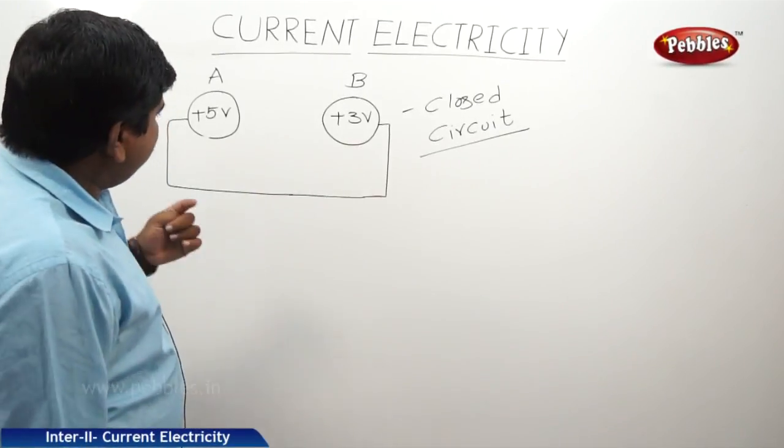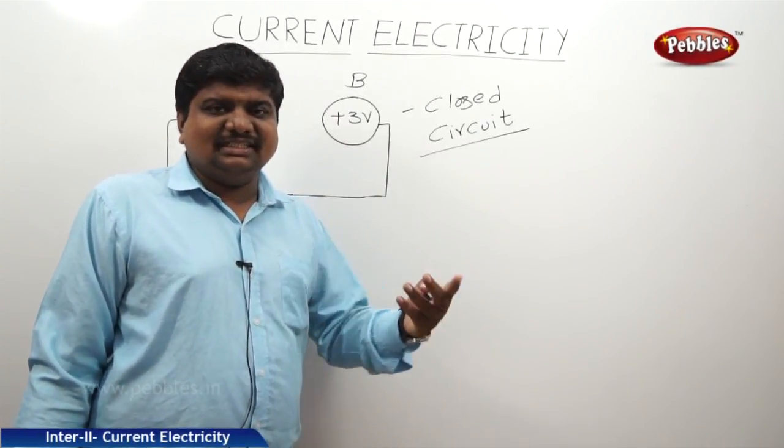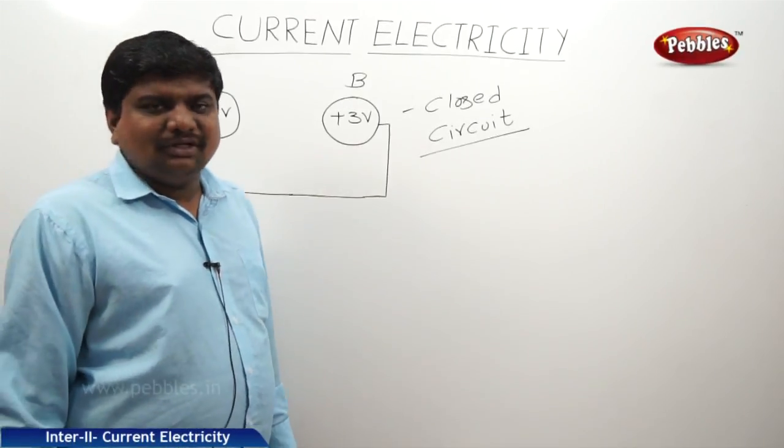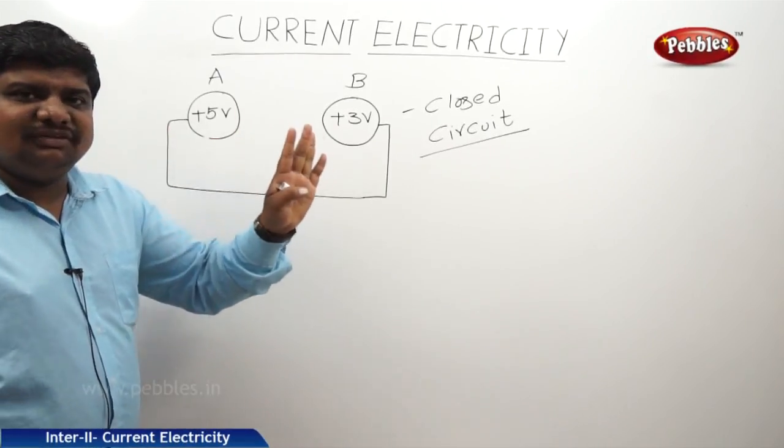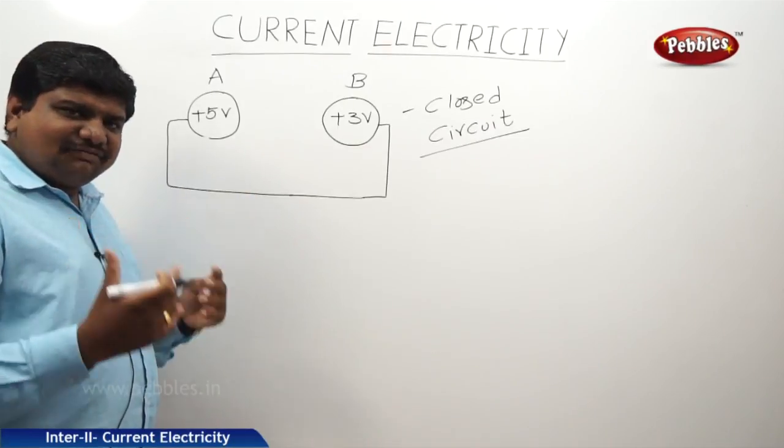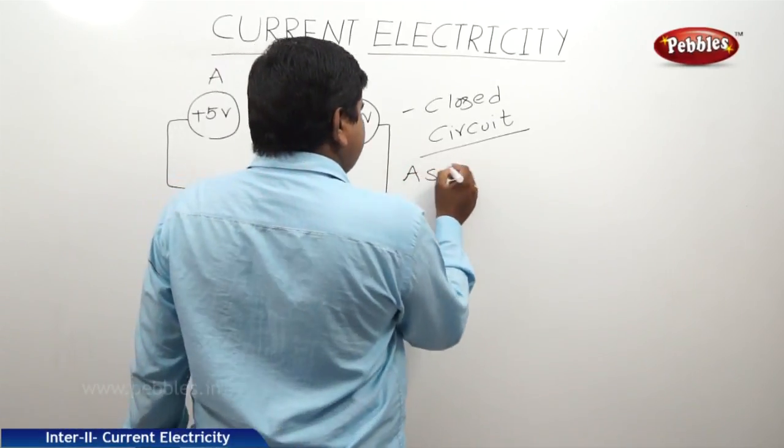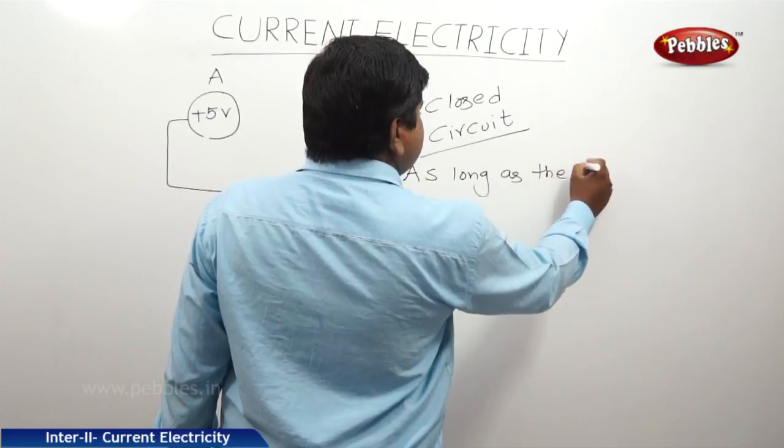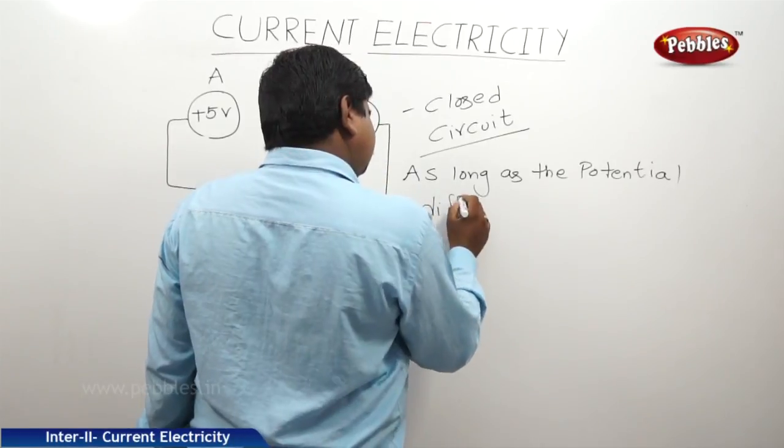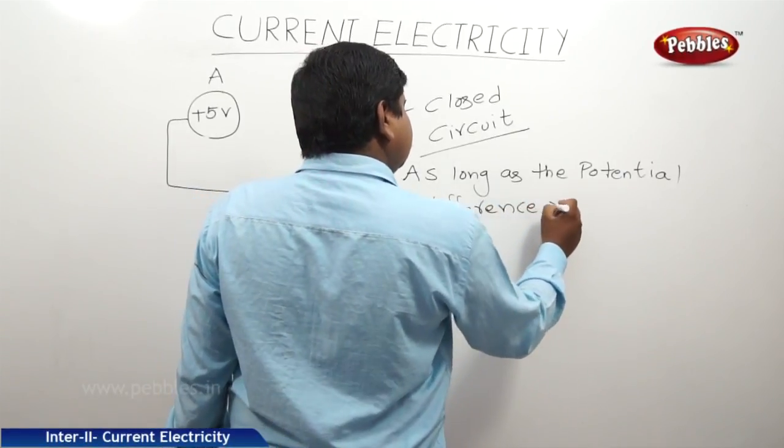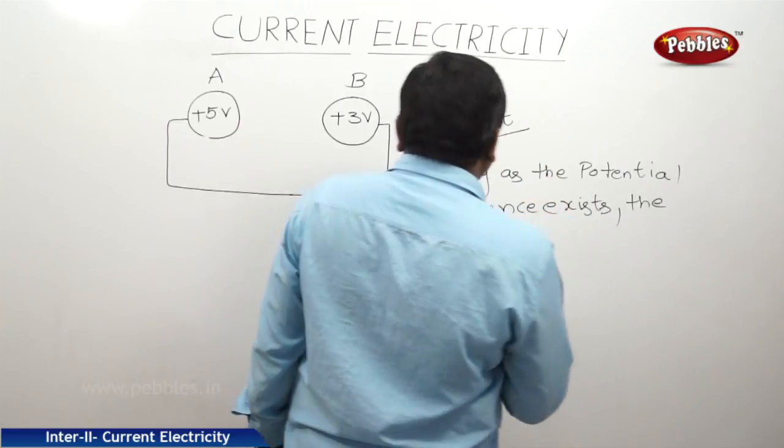Whenever a wire is connected, we know that charge always travels from high potential to low potential. Potential energy decreases. So, as long as the potential difference exists between the two charges, there is a possibility for the current flow. As long as the potential difference exists, the current will flow.